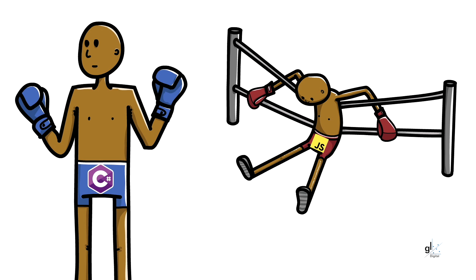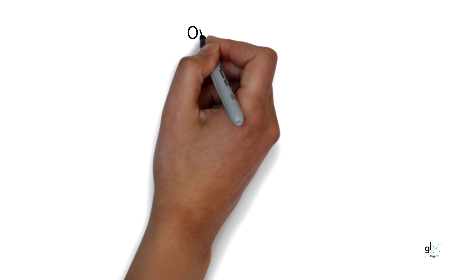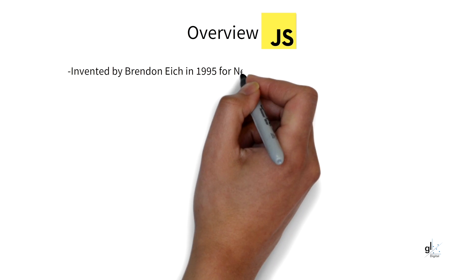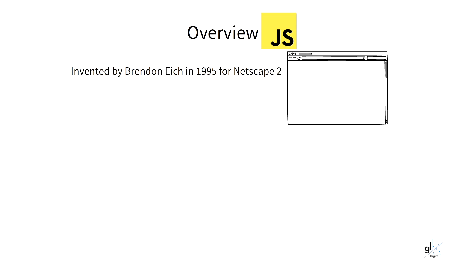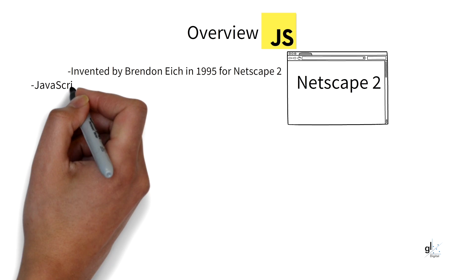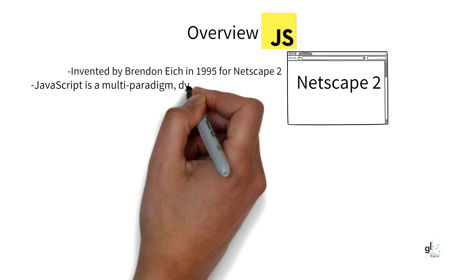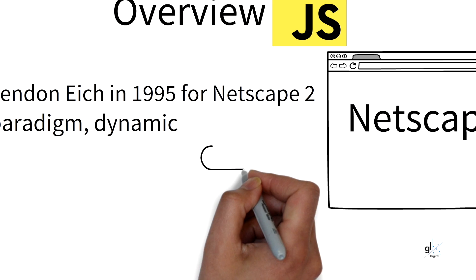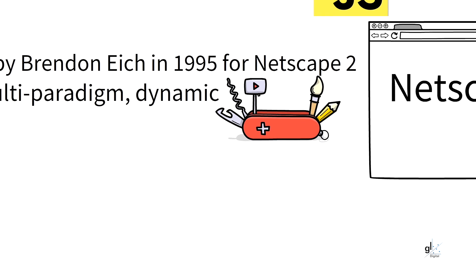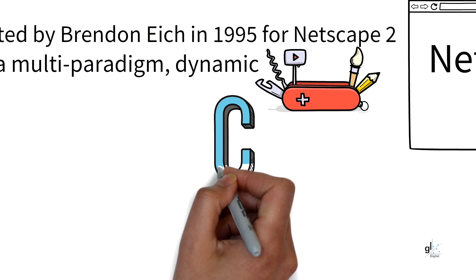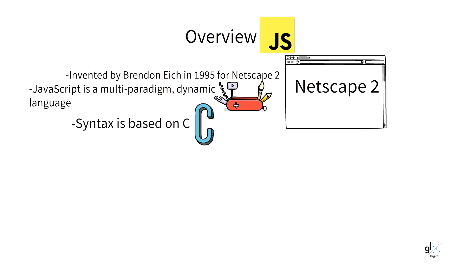Let's start with a brief overview of JavaScript. JavaScript was invented by Brendan Eich in 1995. It was developed for Netscape 2 and became the ECMA-262 standard in 1997. JavaScript is a multi-paradigm dynamic programming language with types, operators, built-in objects and built-in methods. Its syntax is based on C and Java.